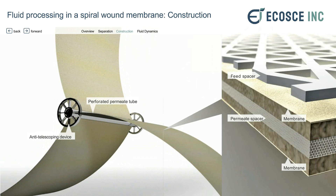The permeate flows through the center hollow tube, where the retentate slides along the surface of the membrane. Looking further at the structure of the membrane, you have a feed spacer that keeps the membrane from fouling as the solution is flowing along the surface.